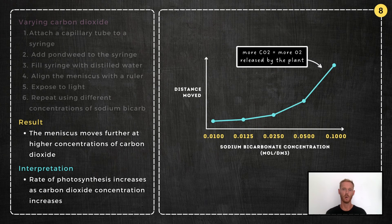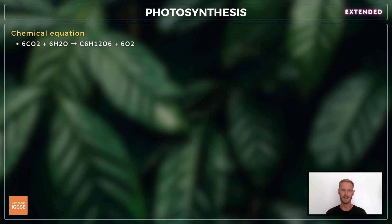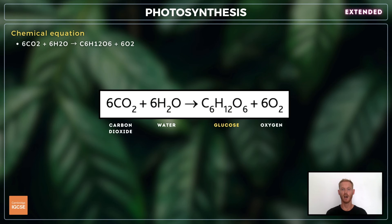That's everything you need to know for the core section, so we'll move on to the extended content. For extended, you also need to be able to state the balanced chemical equation for photosynthesis: six carbon dioxide molecules combine with six water molecules in the presence of light energy and chlorophyll, producing one glucose molecule and six oxygen molecules.